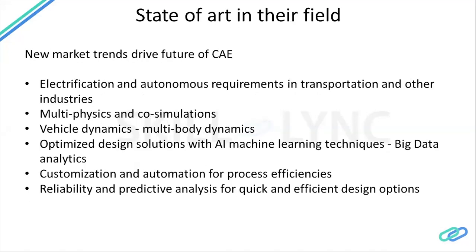Let us understand the state of the art in this field. At the top level, CAE durability is used for electrification requirements in transportation and other industries. The automobile industry has shifted its focus to electrification. For example, if you have a vehicle using an internal combustion engine and the company is shifting to an electrified variant of the same model, the engine would be replaced by a battery, but it still has to fulfill all the targets. CAE durability is a faster solution to make those modifications, validate them, and bring the product to market much faster.